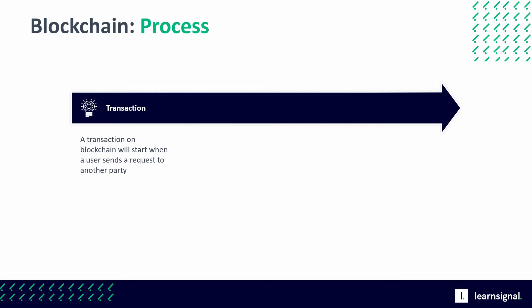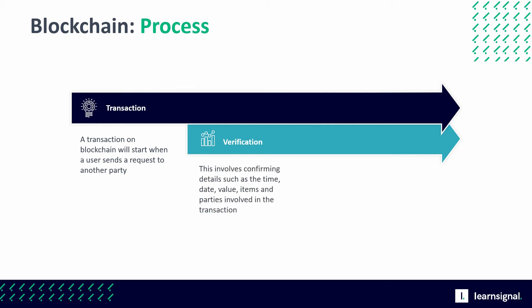The transaction is then held in a pool of unauthorized transactions while it awaits verification. Next, the transaction is verified by the network of computers that is involved in the blockchain. This would involve confirming and checking details such as the date, time, value, items, and parties involved in the transaction. This is achieved through a process known as consensus.